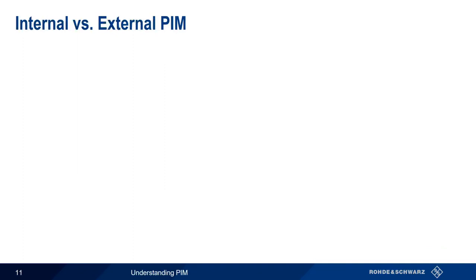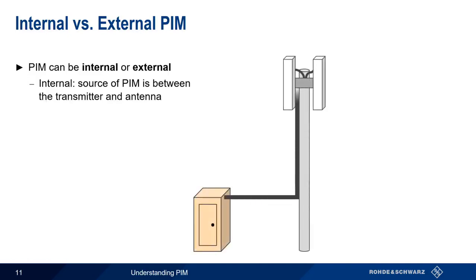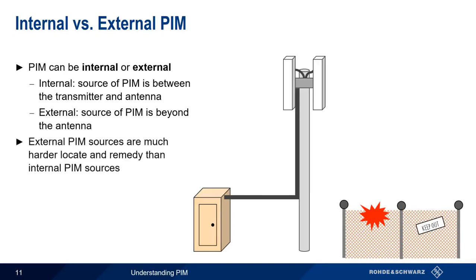Before we move on to PIM testing, there is an important distinction to make: the difference between internal and external PIM. In the case of internal PIM, the source is between the transmitter and the antenna — for example, metal flakes inside base station cables or connectors. On the other hand, if a rusty fence were creating PIM, this is an external PIM source. Generally speaking, external PIM sources are much harder to physically locate and remedy than internal PIM sources.